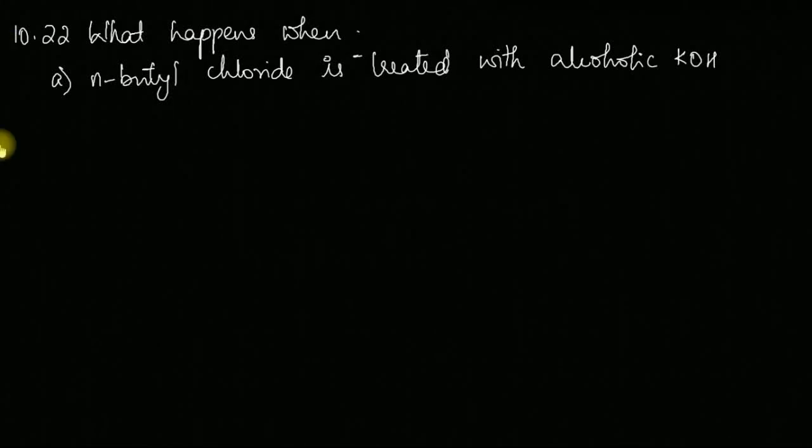Next is question number 10.22. It is a series of conversion reactions, so here the first question is what happens when n-butyl bromide is treated with alcoholic potash. So n-butyl chloride is CH3-CH2-CH2-CH2.